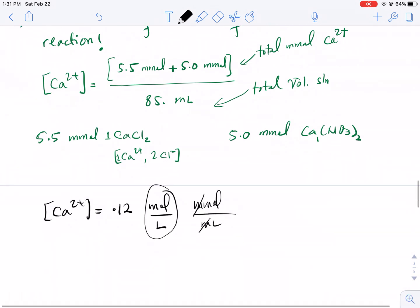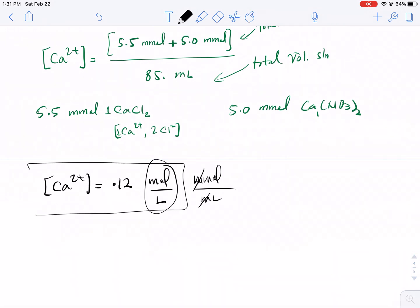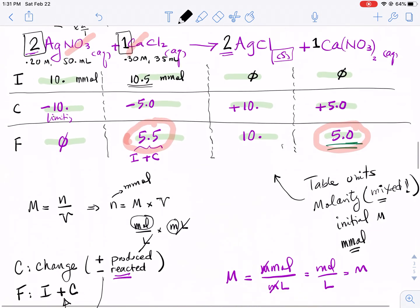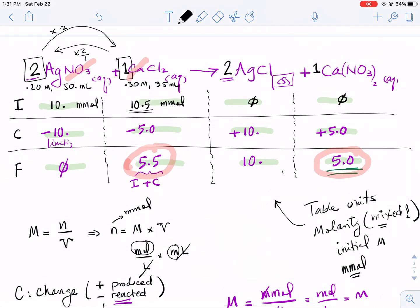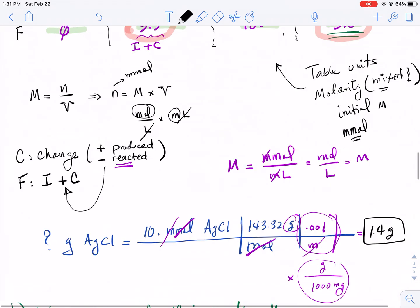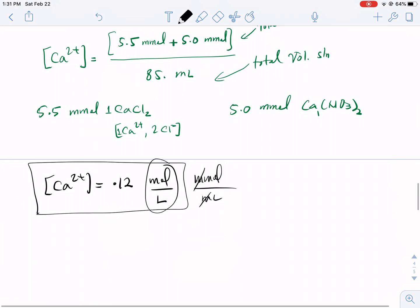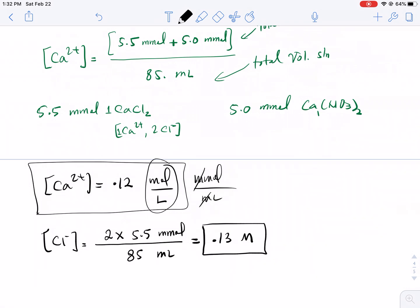We took care of calcium. The next one is chloride. Chloride is only in calcium chloride, not in the other compounds, so it's a little bit easier. Look at your 5.5 millimoles of calcium chloride. The concentration of chloride is equal to - you have a ratio of 2 to 1 now in the formula - so multiply the 5.5 millimoles times 2, divided by 85 milliliters. 2 times 5.5 is 11, divided by 85 is 0.13 molarity. So that's my chloride ion concentration.